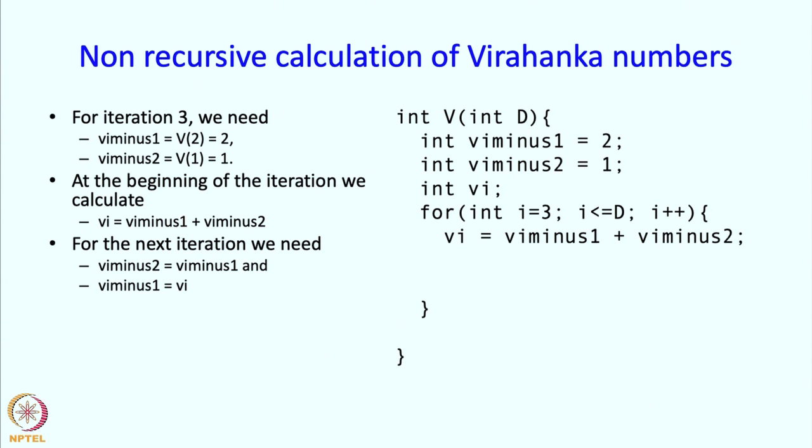But now for the next iteration, that will be the value calculated in the second previous iteration. So that should really go to Vi-2. And Vi-1 for the next iteration is the value that was calculated in the current iteration, and therefore that must become Vi.